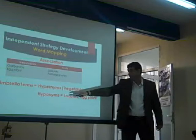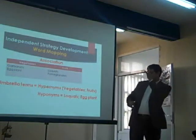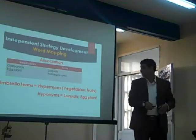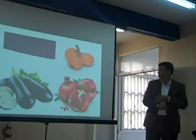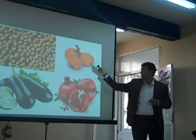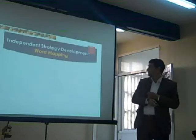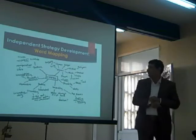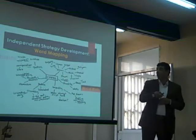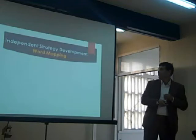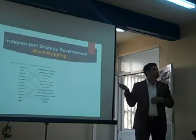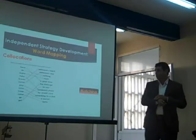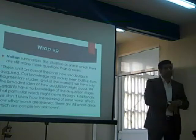We can also work with hyponyms. For vegetables, eggplant is a hyponym — it's under the umbrella term. These are the pictures: pomegranates, chickpeas, and kumquats. That's what we do most in middle school. We have word mapping when we talk about word webs or topics. Other strategies include matching and collocations. The bottom line is: we don't have an overall theory of how vocabulary is acquired, but if we give the tools to students, they can learn on their own, and it helps in English.